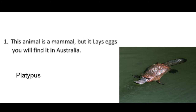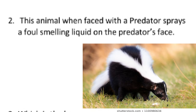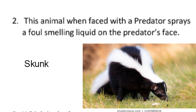Now question number 2: this animal, when faced with a predator, sprays a foul-smelling liquid on the predator's face. You must have seen this animal in a famous story, Jungle Book. It is skunk. A skunk's spray is an oily liquid produced by glands under its large tail. To employ this scent bomb, a skunk turns around and blasts its foe with a foul mist that can travel as far as 10 feet.